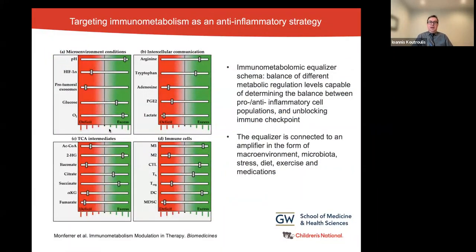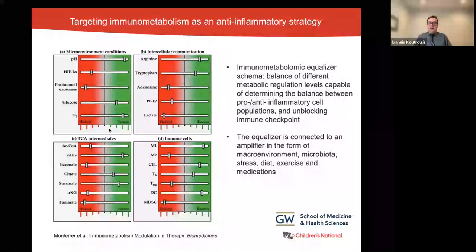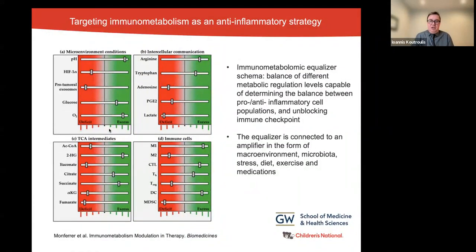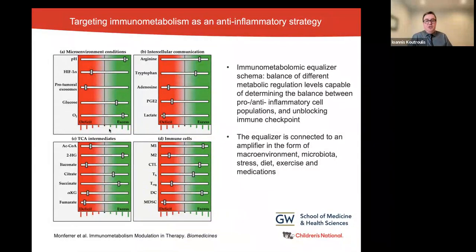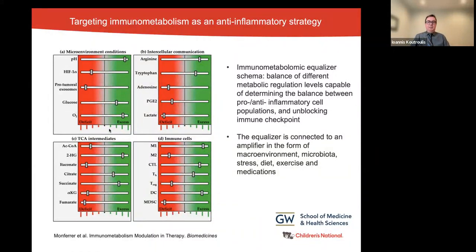How do we approach immunometabolism for the development of treatment? This graphic represents an immunometabolism equalizer. Immune system programming begins at the perinatal stage, matures through environmental stimulation, and is regulated by a balanced network that includes genetic and epigenetic profiles, microbiota, the hypothalamic-pituitary-adrenal axis, sleep, diet, and many other elements. Within this network, metabolism either amplifies or inhibits immune function, determining the physiological or altered responses by microenvironmental conditions such as pH or oxygenation, and intercellular communication with chemokines, lactate, and TCA intermediates.